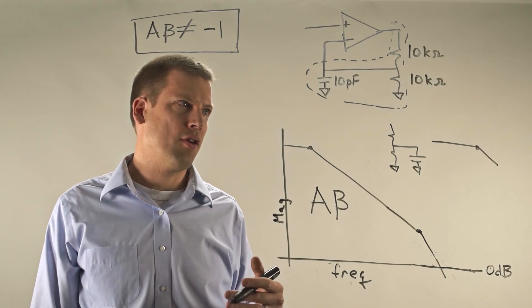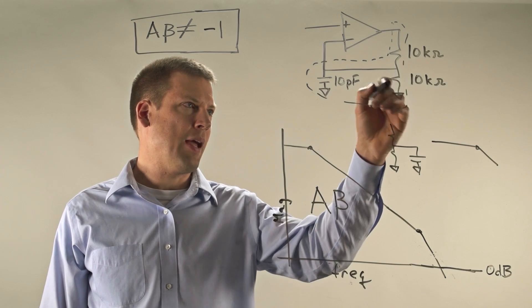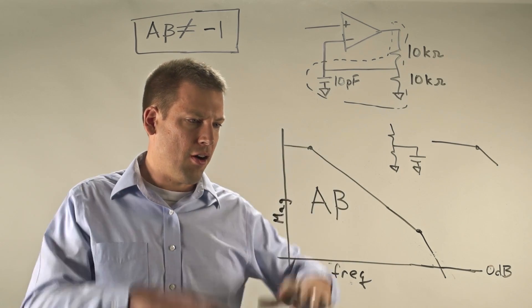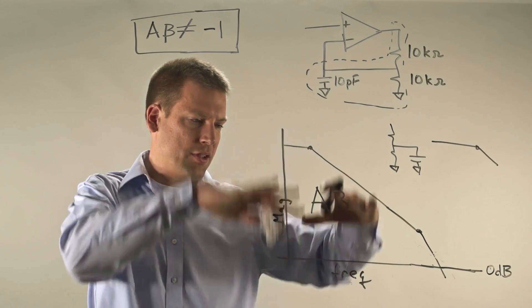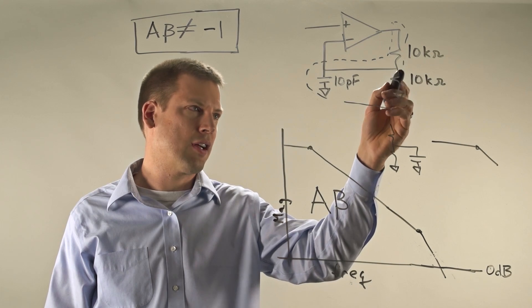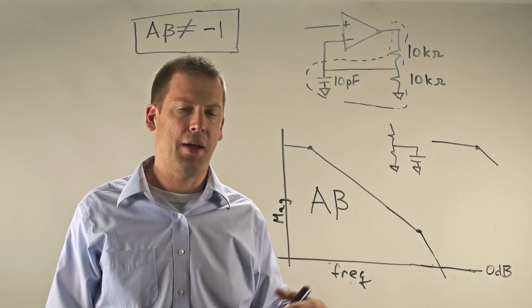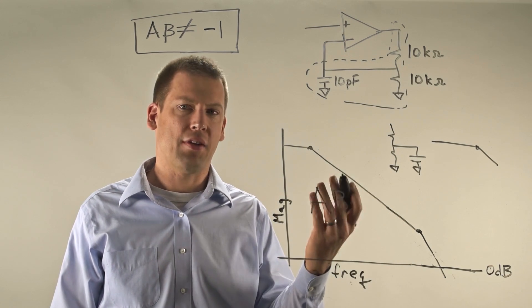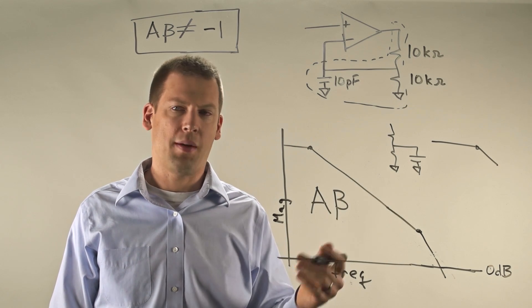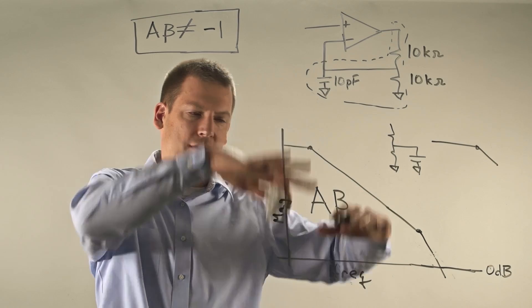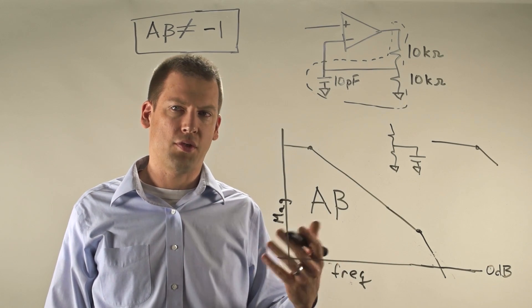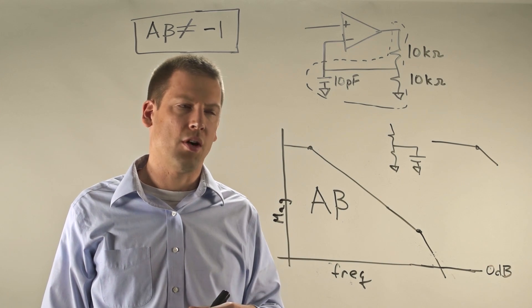A third thing to notice here is that the beta factor, the resistor divider part of the beta factor actually ends up pushing our A beta section, our graph down. So if instead of, I've got a gain of two circuit, which ends up, the beta is the inverse of the gain, so I end up only having a beta of one half. But let's say I did a gain of 100, so my beta was one one hundredth. That would end up pushing this graph down and again, I might be stable. So those are all little tricks you can do to try to make sure that your part stays stable.